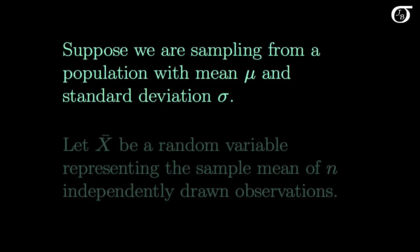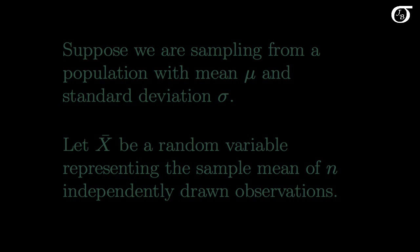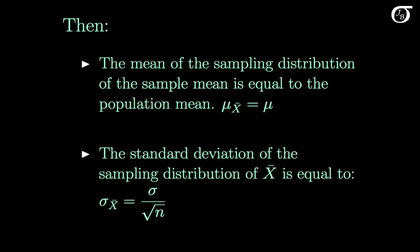Let's recall a few characteristics of the sampling distribution of the sample mean. Suppose we are sampling from a population with mean mu and standard deviation sigma. Let X bar be a random variable representing the sample mean of n independently drawn observations from this distribution. The mean of the sampling distribution of the sample mean is equal to the population mean, and the standard deviation of the sampling distribution of X bar is equal to sigma over the square root of n.